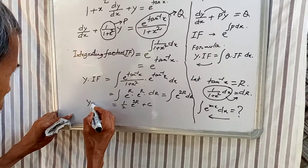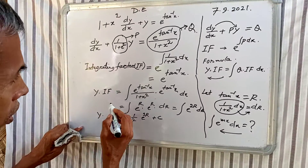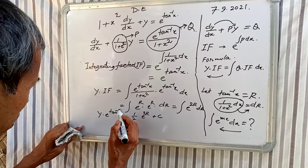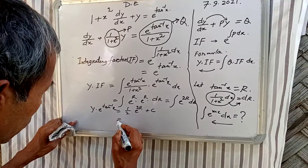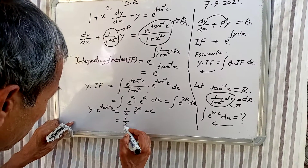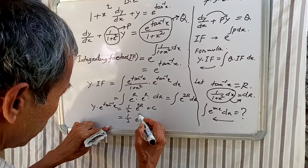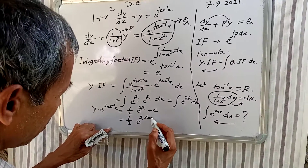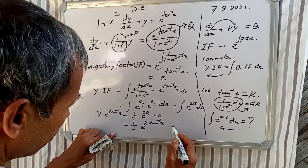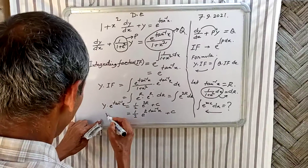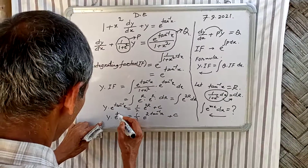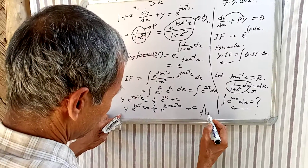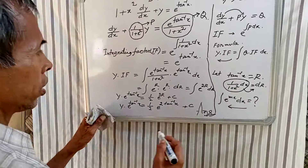Substituting back r = tan inverse x: y · e^(tan⁻¹x) = (1/2) e^(2·tan⁻¹x) + C. This is the final solution.